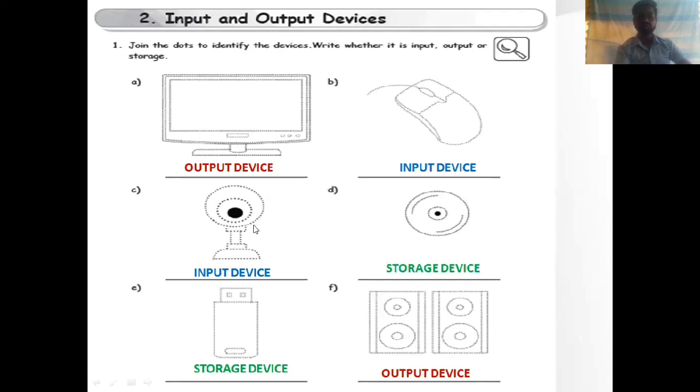C, webcam. Webcam is an input device. D, CD or DVD drive. This is a storage device. In this device you can store different types of data. Pen drive, this is also a storage device. Speaker. With the help of speaker you can listen to music very loudly, so it is an output device.